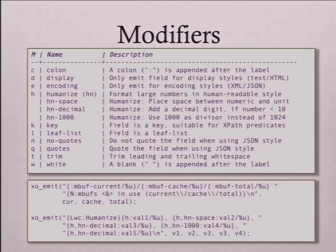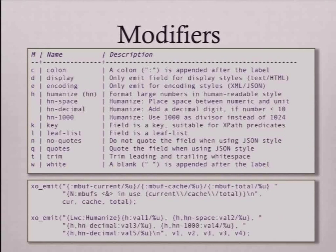There's an issue where if you want to output null in JSON and you're passing in a null pointer in C, even with the no-quotes modifier it was always quoting the word null. That's a bug - I will attempt to get the actual code example.